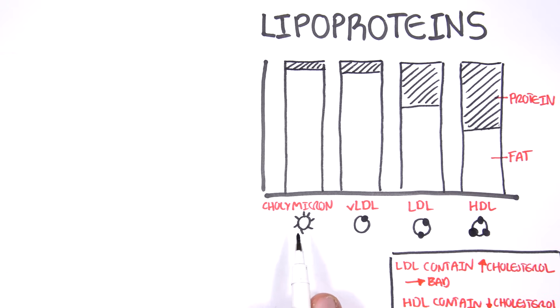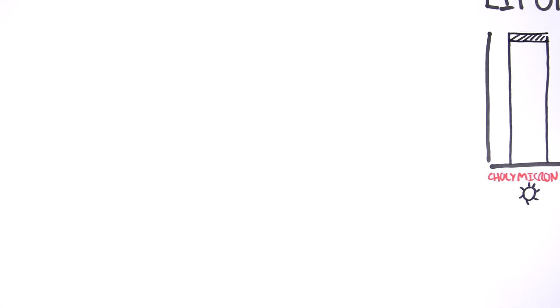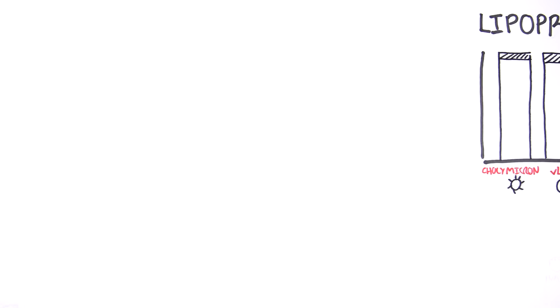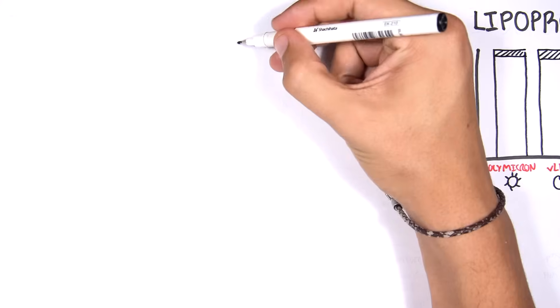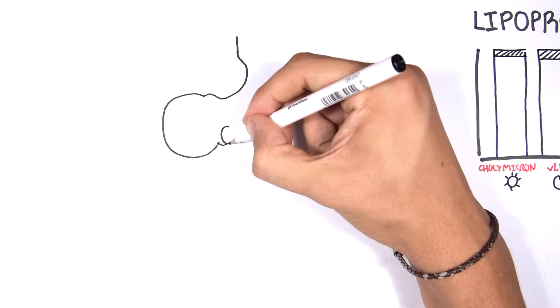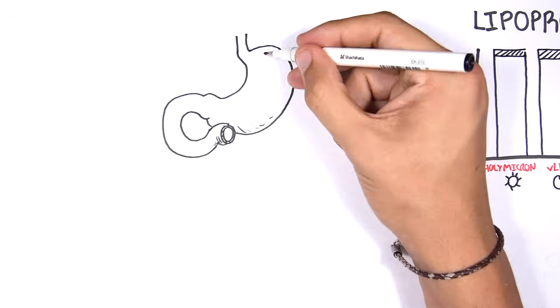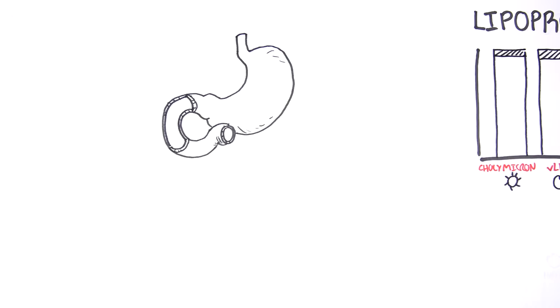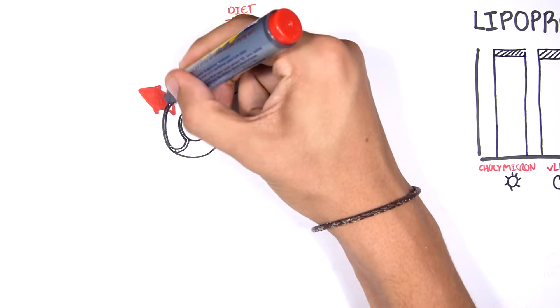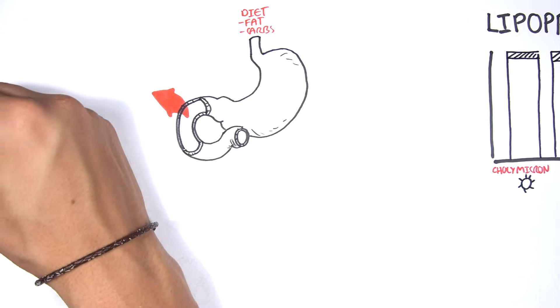Let us begin with chylomicrons. Chylomicrons are responsible for transporting fats that we have absorbed in our diet and delivering it to body tissues. Here we have the stomach and part of the small intestine. Our diet consists of carbohydrates, fats, and proteins.